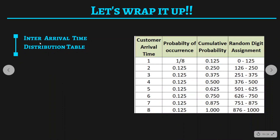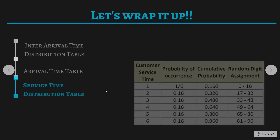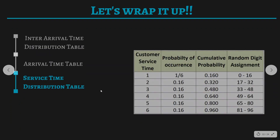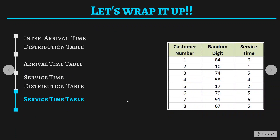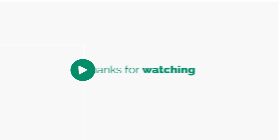Let's wrap up. We first calculated the inter-arrival time distribution table, which helped us compute the arrival time for each customer. Then we computed the service time distribution table, which told us how much service time each customer requires. Finally, we performed the simulation table for 8 customers. I hope you understood how to solve this type of problem. If you have any doubts, you can write to us at codewrestling.com. Thank you so much — stay tuned, and happy learning!